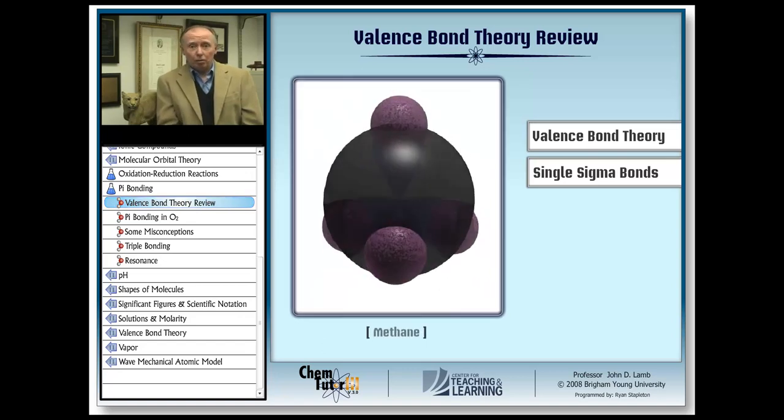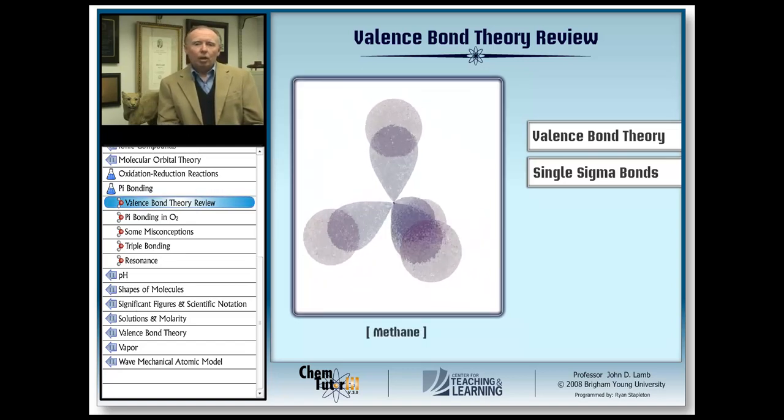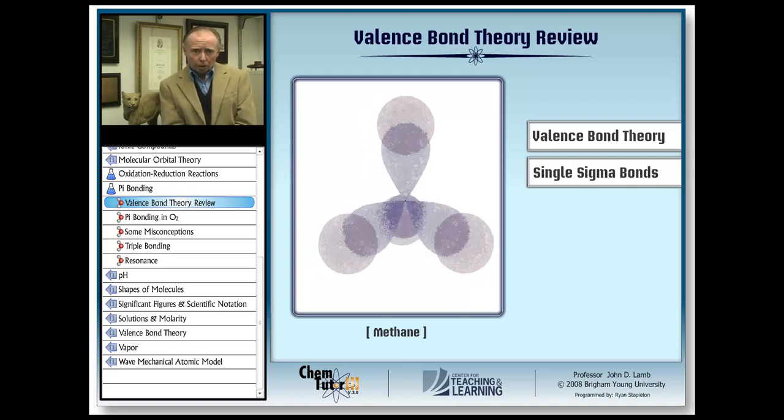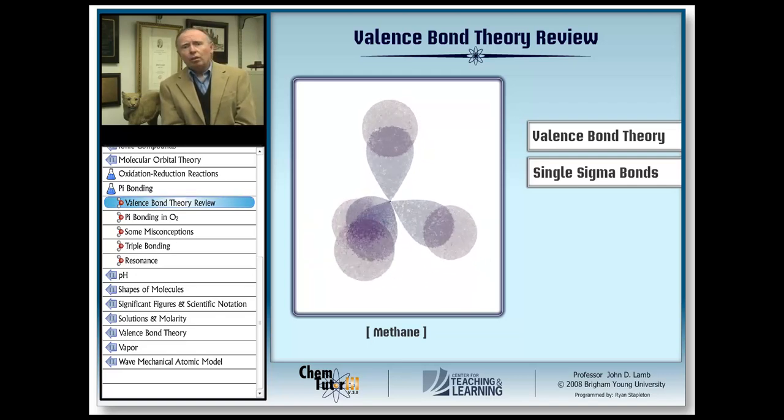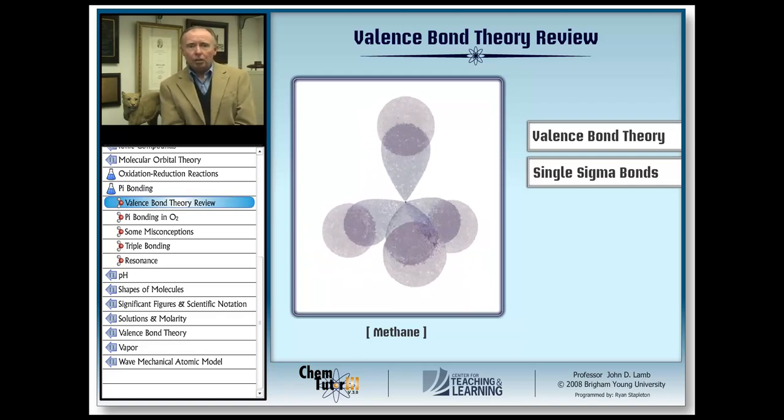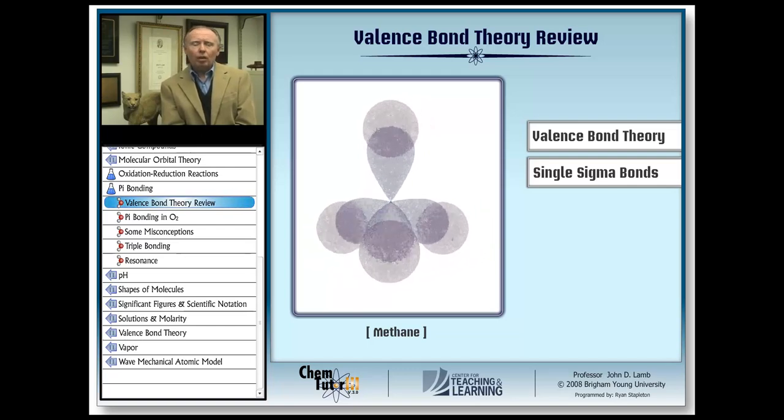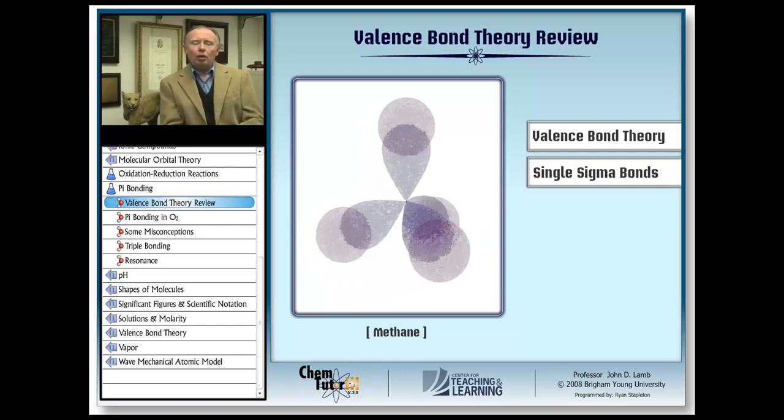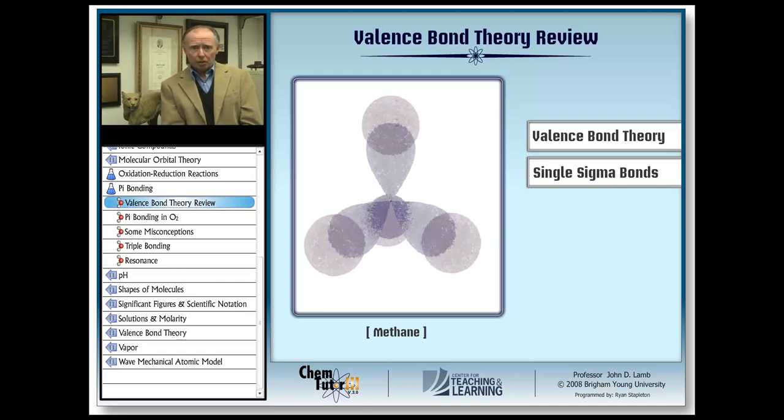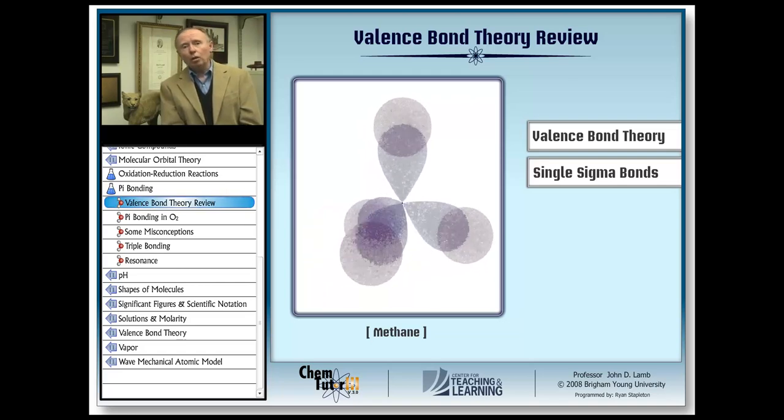You might want to stop and admire it for a minute. But anyone who has practiced doing Lewis dot structures knows that covalent molecules can contain double and triple bonds as well. So this time we're going to see how valence bond theory treats these kinds of bonds between atoms and molecules.